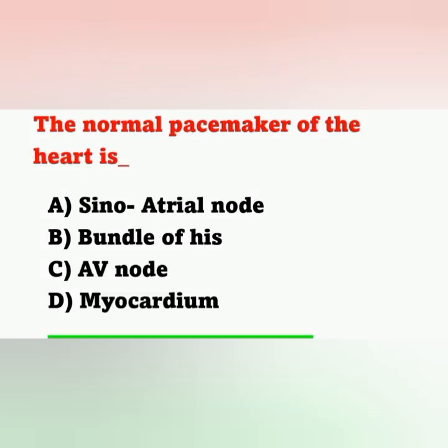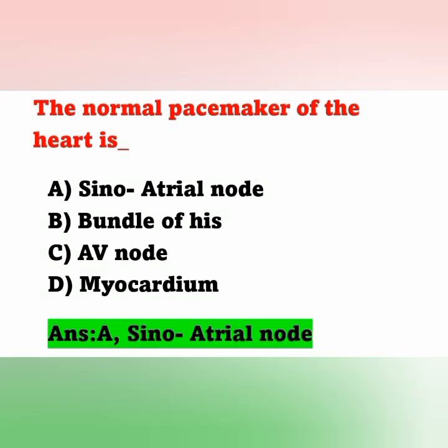The next question: The normal pacemaker of the heart is — Option A: sinoatrial node; Option B: bundle of His; Option C: AV node; Option D: myocardium. The pacemaker of the heart is the sinoatrial node, or SA node. Option A is the correct answer.